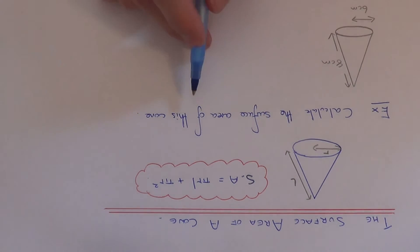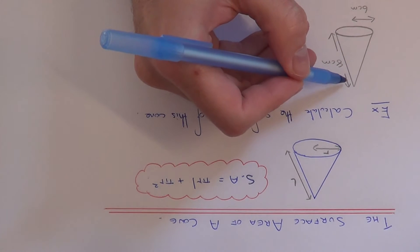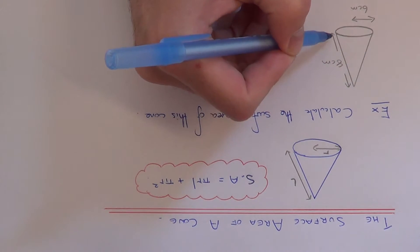So let's have a look at the example which we have here. We've got to calculate the surface area of this cone. So it's got a radius of 6 and it's got a sloping edge of 8.